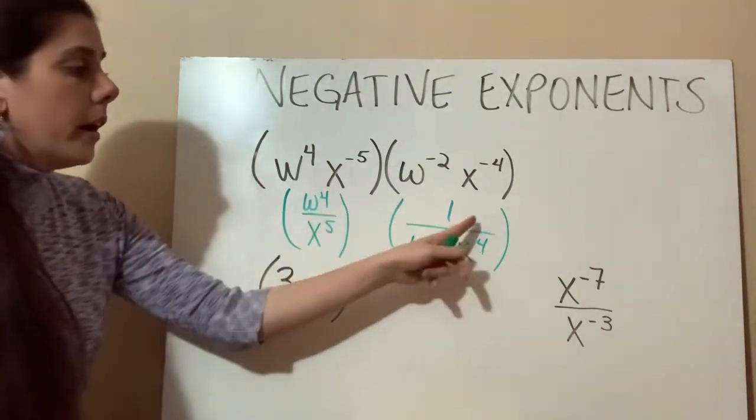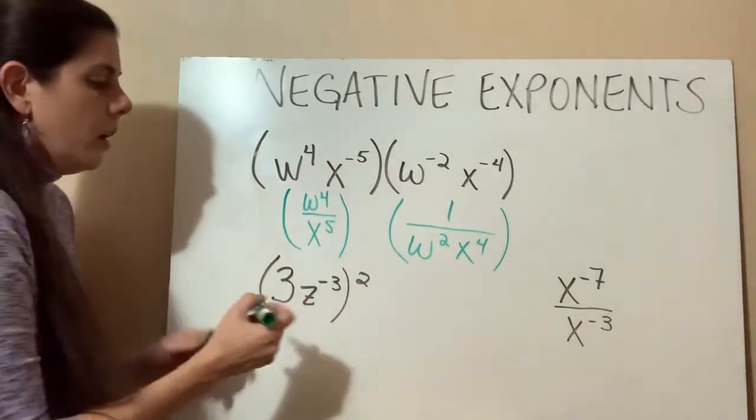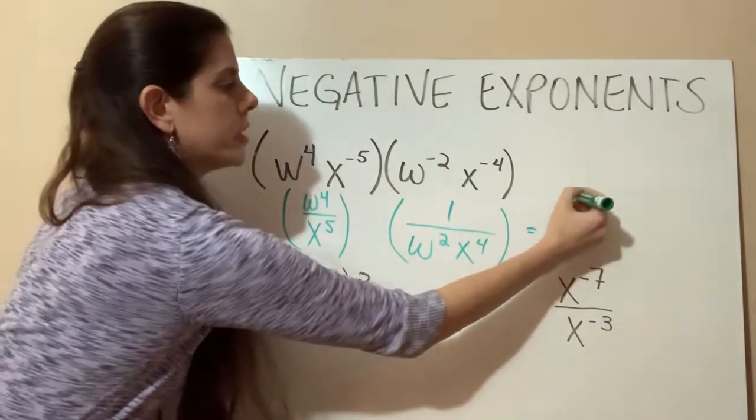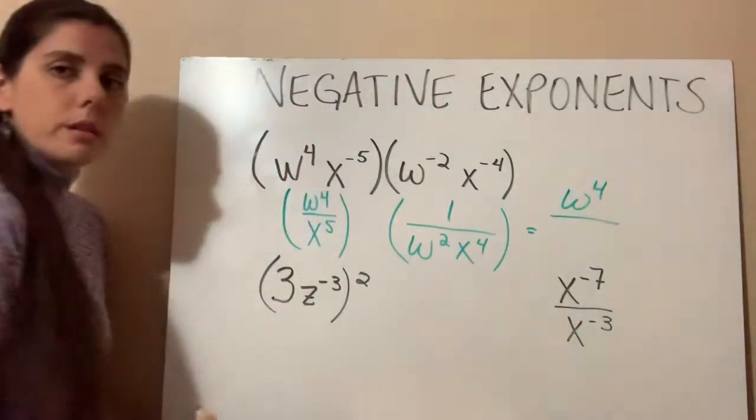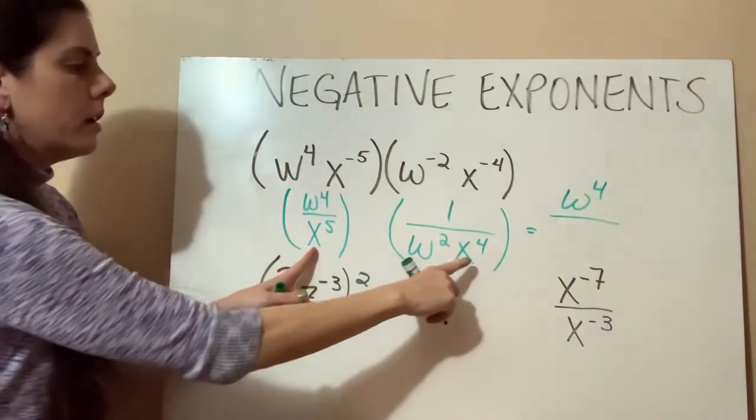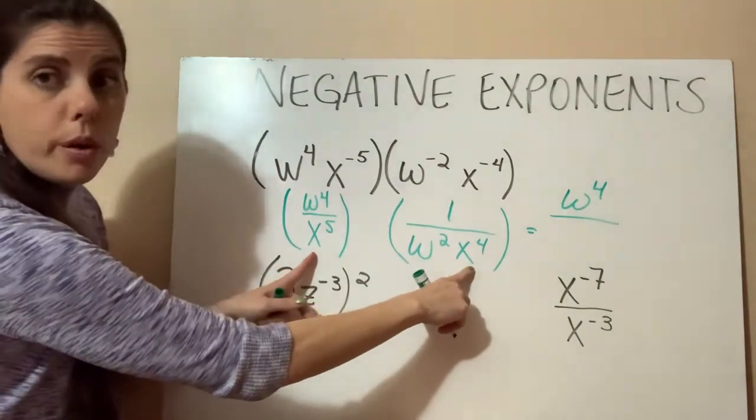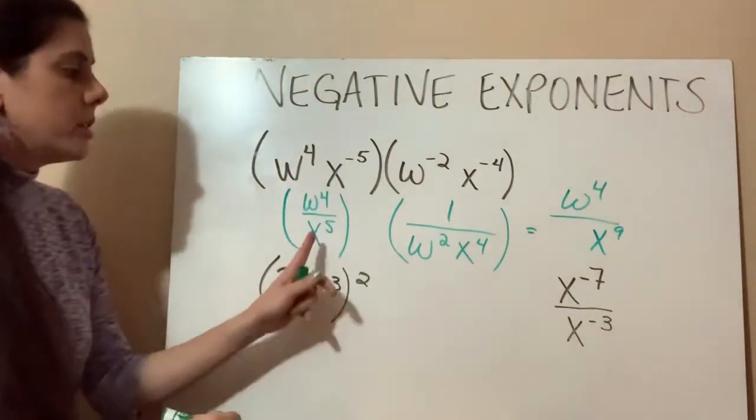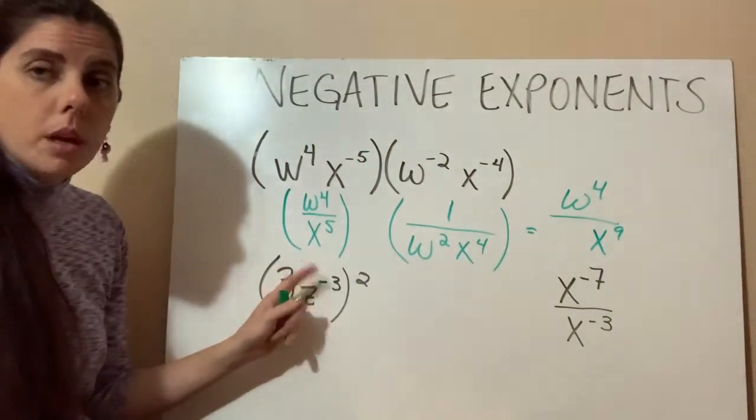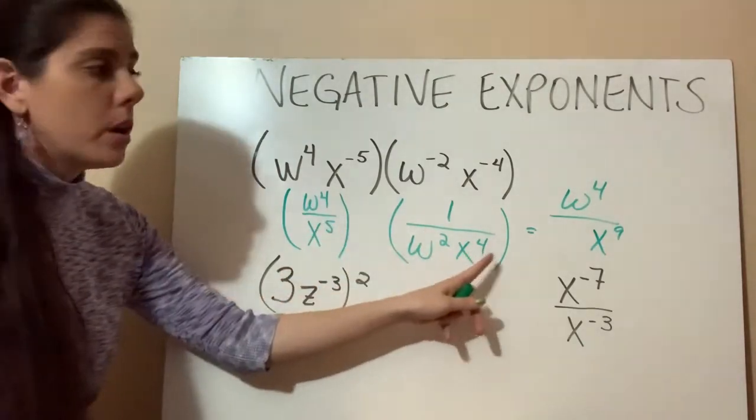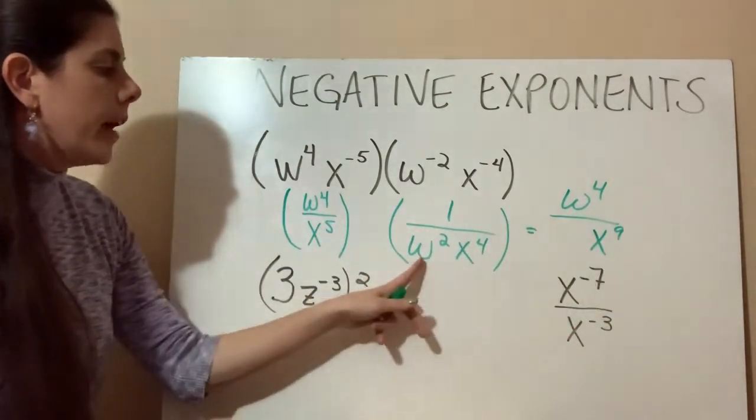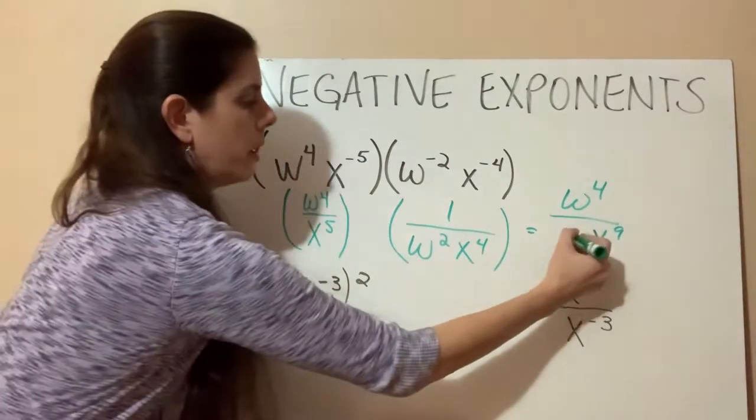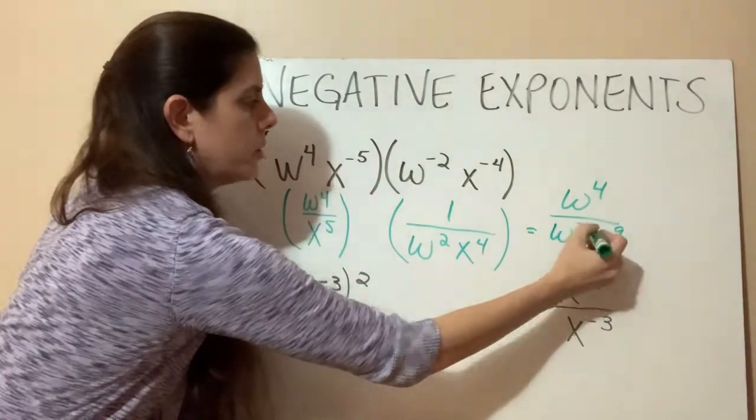So now we can just use our multiplication. So in our multiplication, w to the 4th times 1 is just going to equal w to the 4th. And then we have an x to the 5th here times an x to the 4th here. So that's going to give us an x to the 9th, correct? So when we're multiplying variables that are the same, we add the exponents. It's 5 plus 4 equals 9, and then this w squared can't be combined or multiplied with anything else because there's no other w's on the bottom. So we're just going to have a w squared on the bottom.